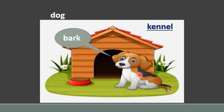Which animal is this? It's a dog. A dog barks. What is the sound it makes? It makes 'bau bau' — yes, we had learned this before. And a dog lives in a kennel. Which sound does it make? It barks.